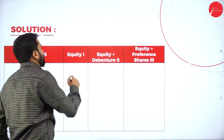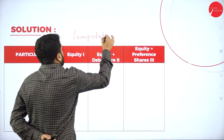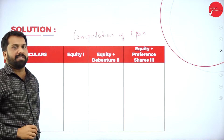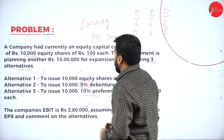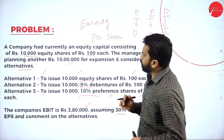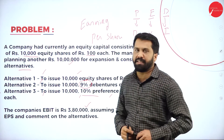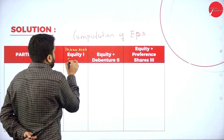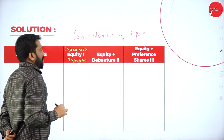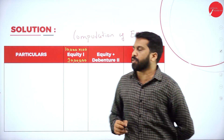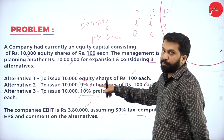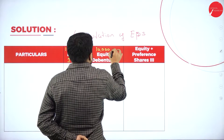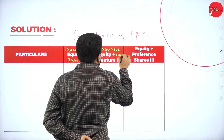Solution part is very simple. The heading must be 'Computation of Earning Per Share.' We have Alternative 1, Alternative 2, and Alternative 3 — total 3 alternatives. Option 1: 10,000 equity shares of Rs. 100 each — that is 10 lakh. Option 2: 10,000 9% debentures of Rs. 100 each — also 10 lakh. Option 3: 10,000 preference shares of Rs. 100 each — also 10 lakh.